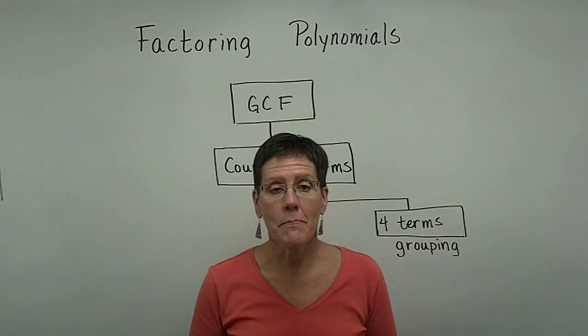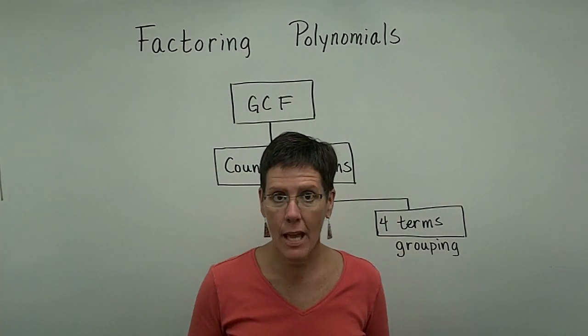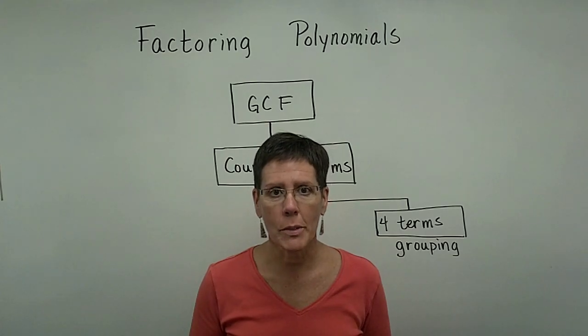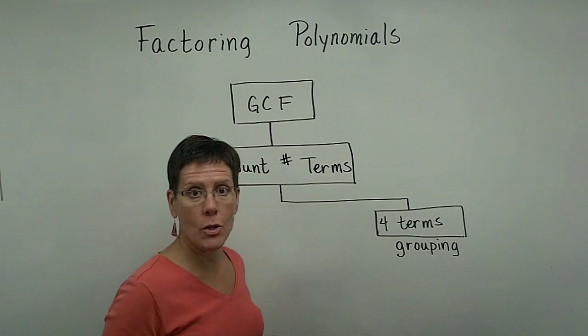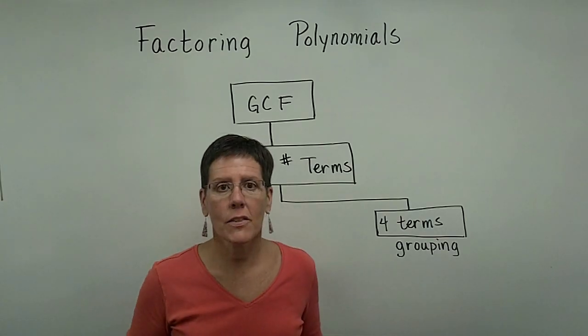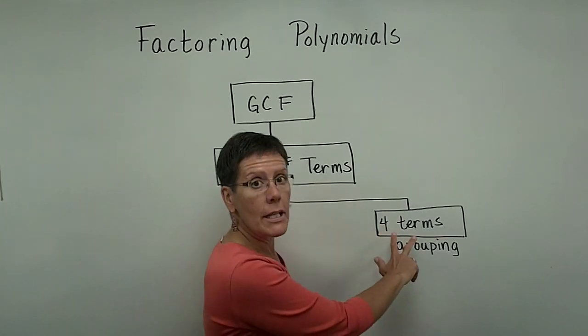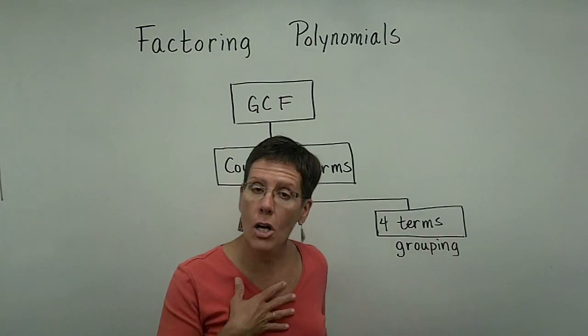Let's take a look at some more factoring, remembering that we always take the greatest common factor out first of any polynomial, and after that we count the number of terms. If there are four terms in the polynomial, we're going to use a method called grouping.